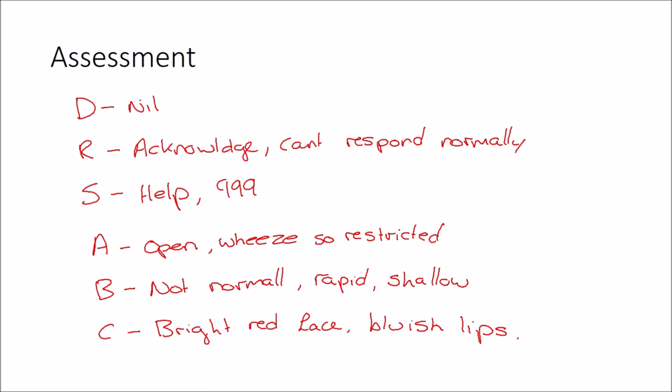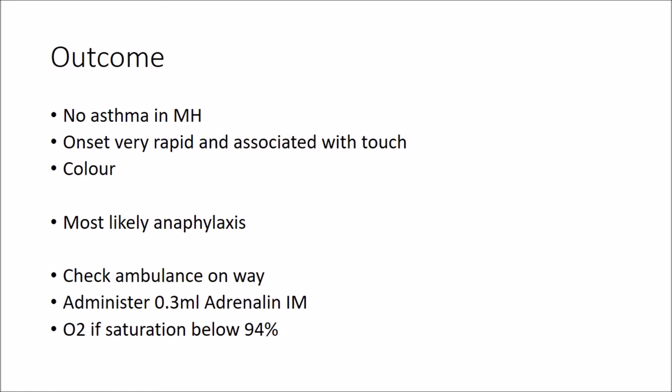So this would be an easy one to make a presumption if you hadn't done your full assessment. You could easily think, oh, the child, they're having an asthma attack. Give them some salbutamol. That would not help this patient at all. Because we've done our full assessment and we've recognized they've got a restricted airway, the breathing is not normal, and they have the circulation issues. So we can come to the outcome of it being anaphylaxis.